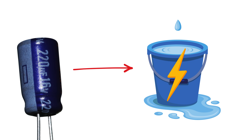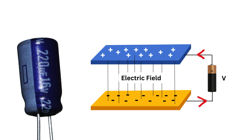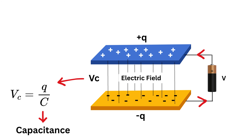A capacitor is like a tiny charge bucket. It stores charge on its plates, but it doesn't allow current to pass through it directly like a wire. Instead, it builds up charge, which creates a voltage across its plates. This voltage is given by V equals Q divided by C, where Q is the charge stored at any given time and C is the capacitance.